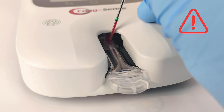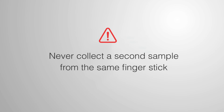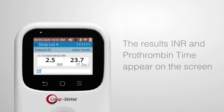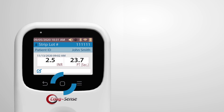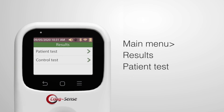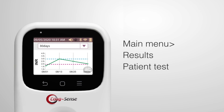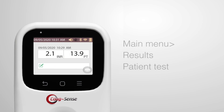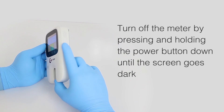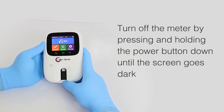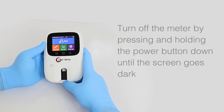Never add more blood to the test strip. Never collect a second sample from the same finger stick. When testing is complete, the results appear on the screen. The test result is recorded in memory and can be found on the main menu using Results and then Patient Test. Turn off the meter by pressing and holding the power button until the screen goes dark.